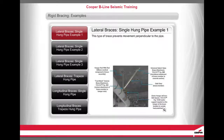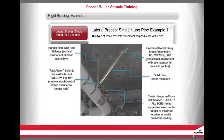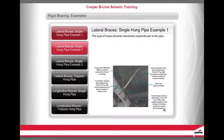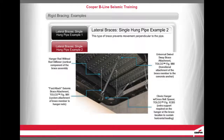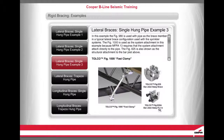This type of brace prevents movement perpendicular to the pipe. In this example, the Figure 980 is used with pipe as the brace member in a typical lateral brace configuration used with fire sprinkler systems. The Figure 1000 is used as the system attachment because NFPA 13 requires that the system attachment attach directly to the pipe. The Figure 825 is also shown as the structural attachment to the bar joist above.